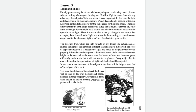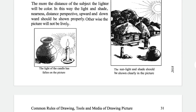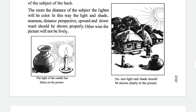The shade gets mixed with the color of the opposite direction. Every subject has its own color and so the application of light and shade should be adjusted. We saw two pictures in this space — the light of the candle has fallen on the first picture, and the second one is sunlight. Light and shade should be shown clearly in the picture.